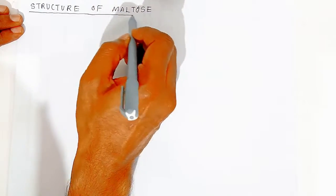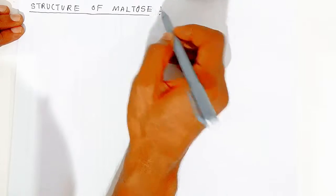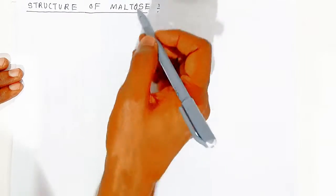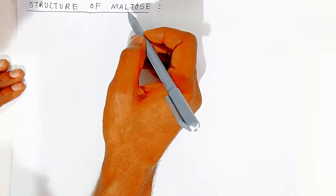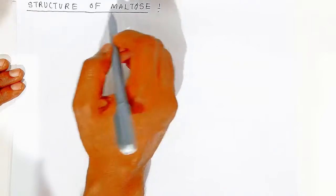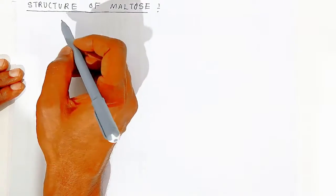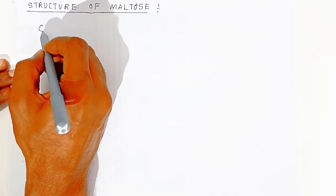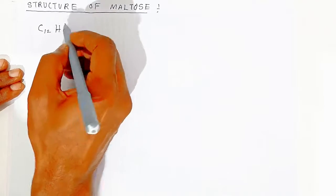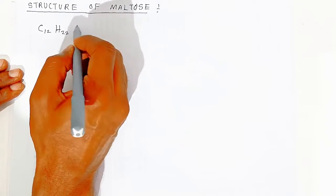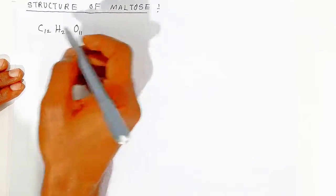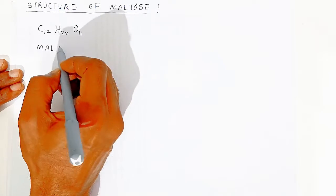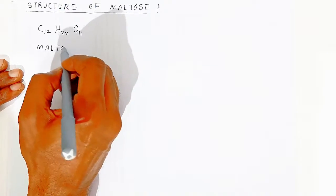Now we are going to see the structure of maltose. The molecular formula of maltose is similar to that of sucrose: C₁₂H₂₂O₁₁. The molecular formula is the same, but the structural formula is different.